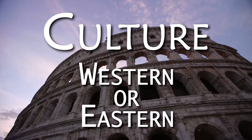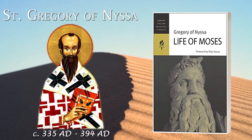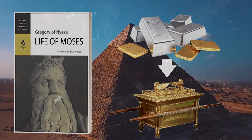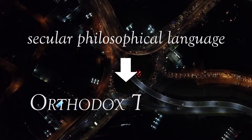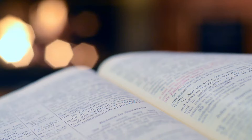Gregory of Nyssa, in his book Life of Moses — where he was likely influenced by Origen of Alexandria — tells his readers that the Israelites plundered the Egyptians insofar as they took gold and silver from them to use later for the building of God's tabernacle. Likewise, Christians can use secular philosophical language to formulate their orthodox theology. In studying how the fathers spoke the language of their time to spread and simplify the message of the gospel, we might be able to further spread the gospel using the very same strategy.